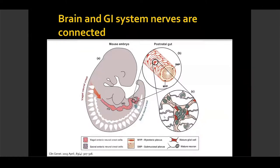As we see here on this graph, the vagal neural crest derived cells enter approximately from the oral end of the embryonic gut and then migrate along its entire length, giving rise to the majority of the glial cells in the enteric nervous system. Then the sacral neural crest cells enter the hind gut and migrate proximally in the oral direction to form the neurons in the glial and the distal portion of the gut.